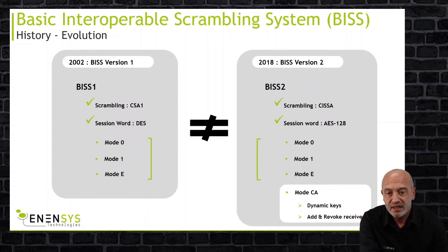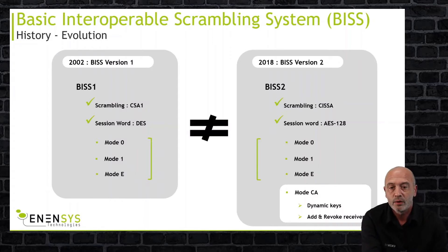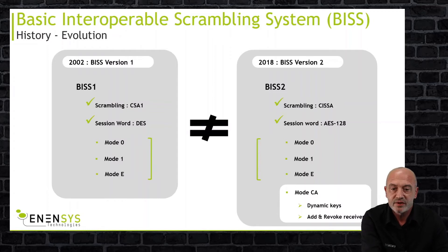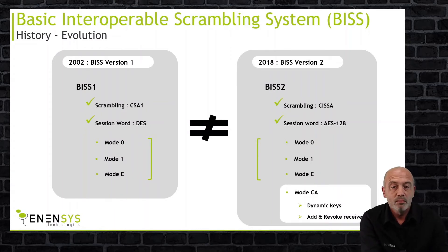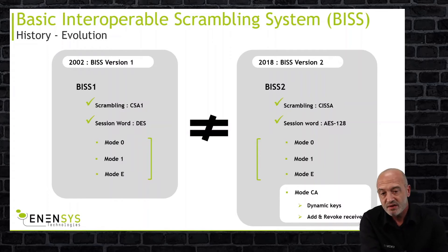This standard has been updated in 2018 with new ingredients and more powerful algorithms — that's version 2 of the BIS standard. CSA for the scrambling and AES for the key encryption. Like BIS version 1, it comes with Mode 0, Mode 1, Mode 2. But a fourth mode has been added, which is called CA — CA for conditional access.